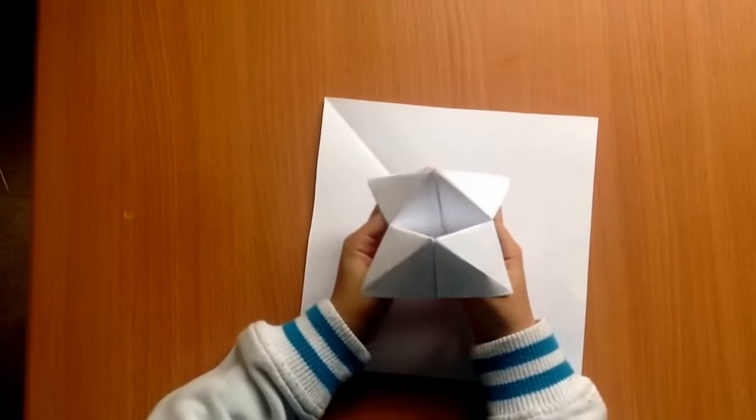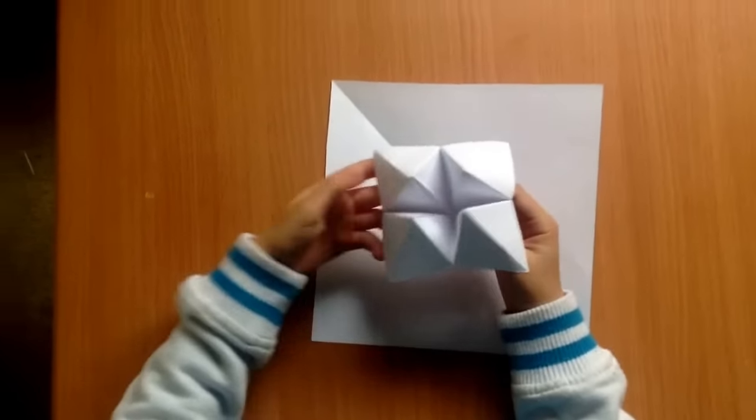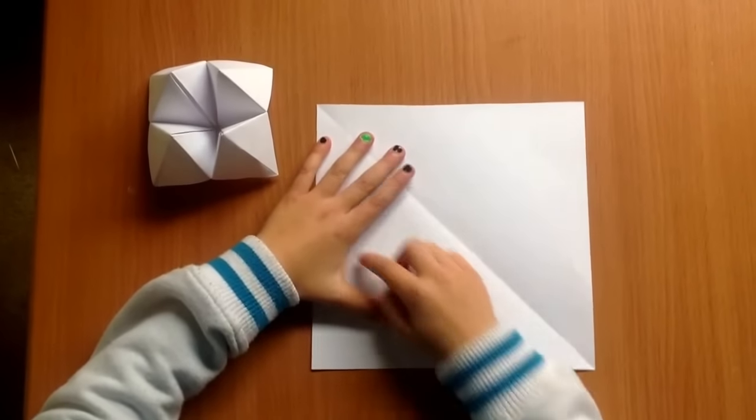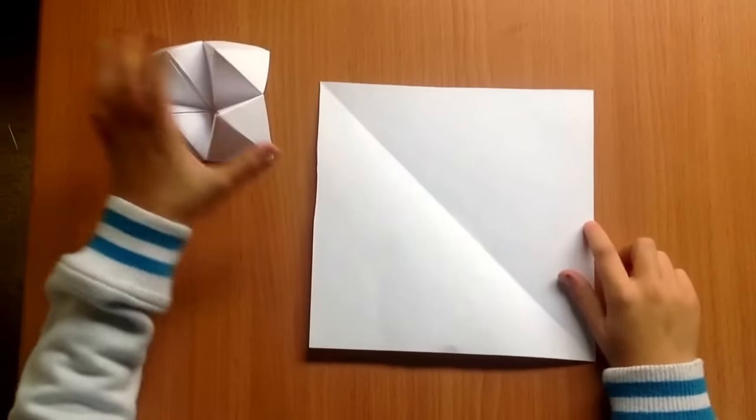To start off this chatterbox origami, what you're going to need is a square piece of paper. We're using a ratio of about 20 by 20 centimeters. So here we go.